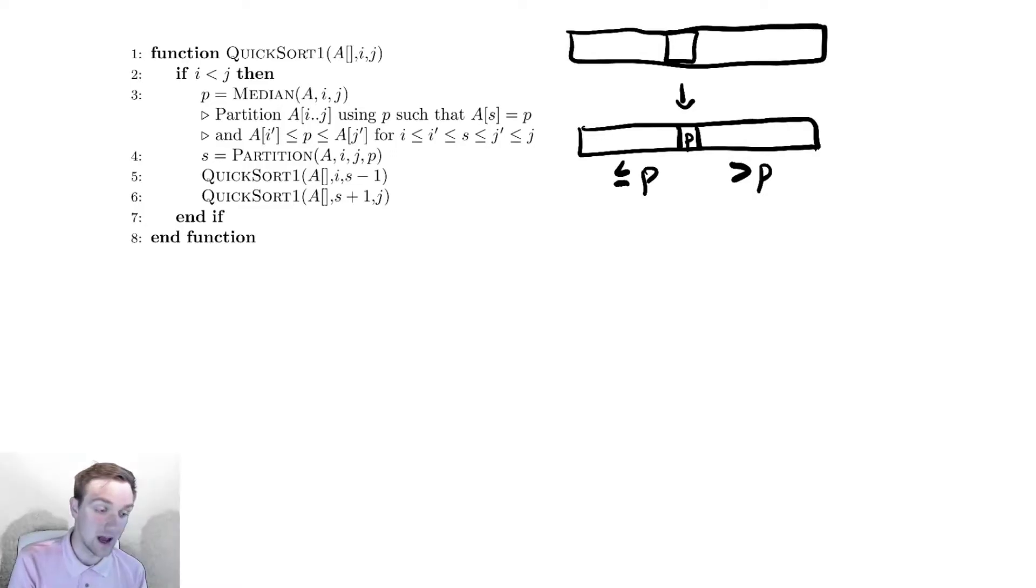And then we sort those two halves. We sort them both using quicksort. We partition and partition and partition. So this should look similar to merge sort. We're splitting an array and seeing what happens.